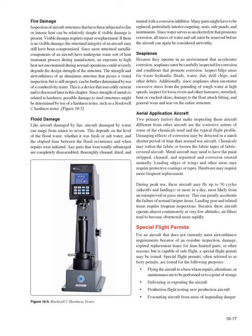Seaplanes: Because they operate in an environment that accelerates corrosion, seaplanes must be carefully inspected for corrosion and conditions that promote it. Inspect bilge areas for waste hydraulic fluids, water, dirt, drill chips, and other debris. Additionally, since seaplanes often encounter excessive stress from pounding rough water at high speeds, inspect for loose rivets and other fasteners, stretched or bent or cracked skins, damage to float attach fittings, and general wear and tear on the entire structure.